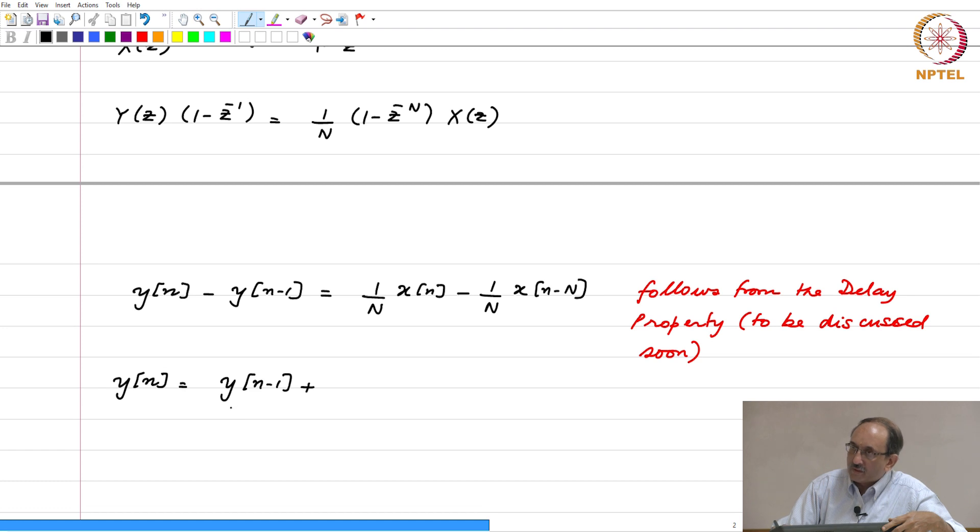We were expressing the n-point average as an update over the previous average. Take the previous average, add in the newest sample, and then subtract out the